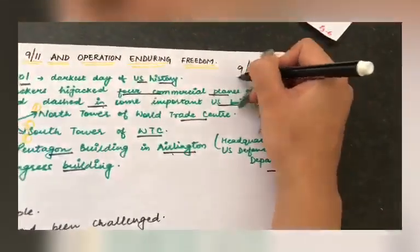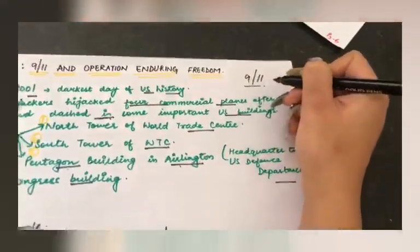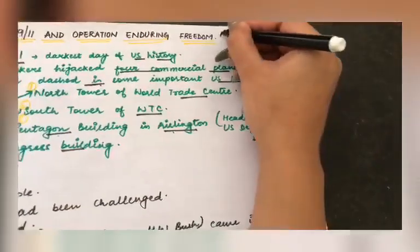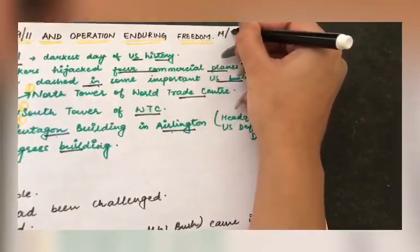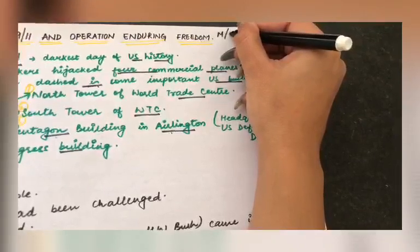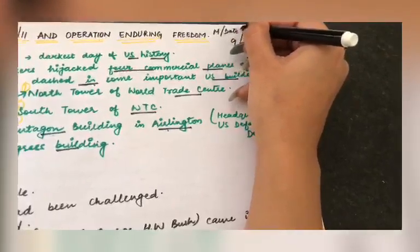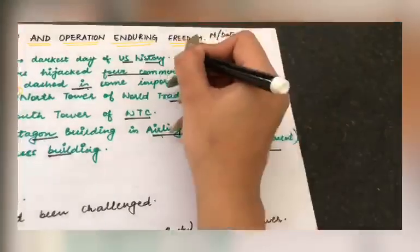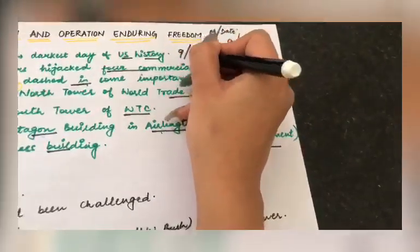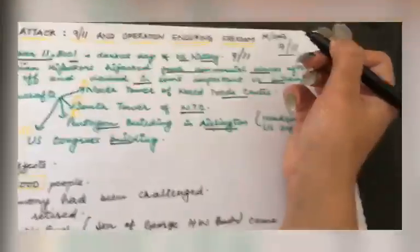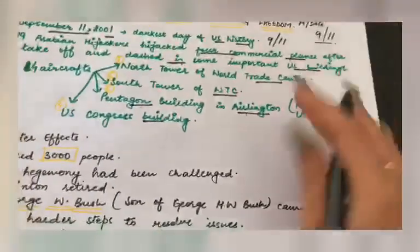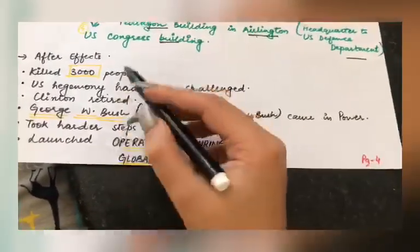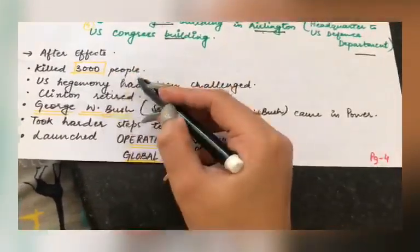This is called the 9/11 attack. The US method of writing dates is month first, then date — so 9 means September (9th month), and 11 is the date; hence it is called the 9/11 attack. The after-effects were devastating: almost 3,000 people were killed. At that time, Clinton had retired and George H.W. Bush's son, George W. Bush, came to power. He took harder steps to address this issue.